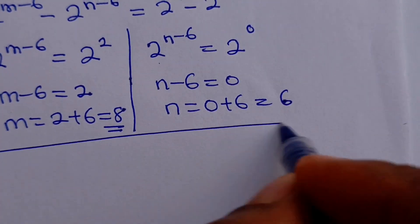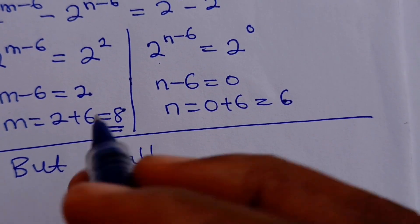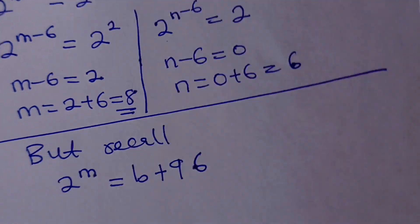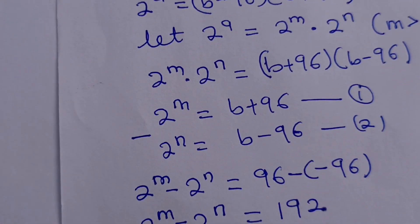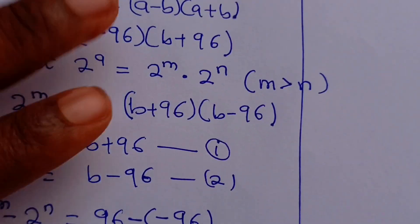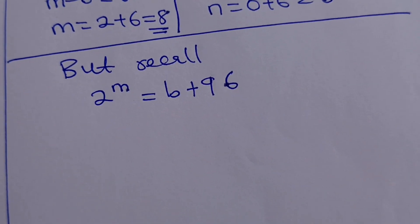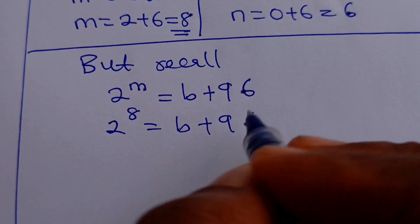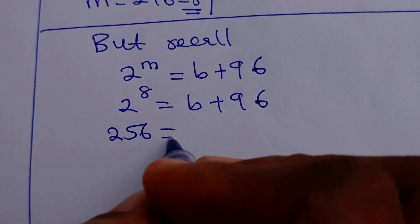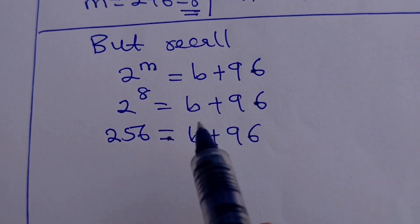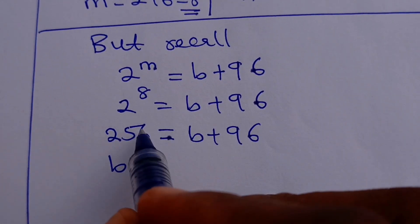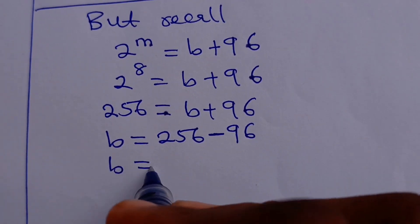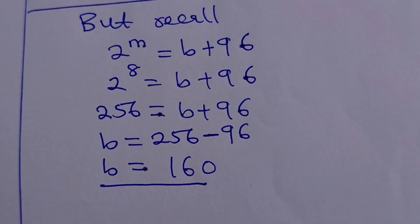Recall that 2 to the power of M equals B plus 96. Since M equals 8, we have 2 to the power of 8 equals B plus 96. Now 2 to the power of 8 gives us 256. So 256 equals B plus 96. Therefore B equals 256 minus 96, which is equal to 160.